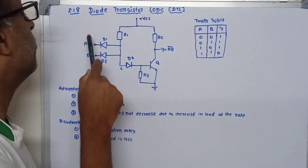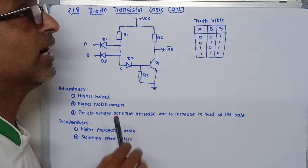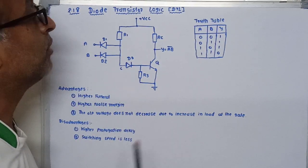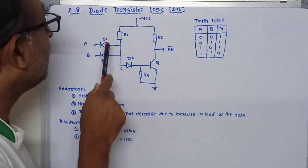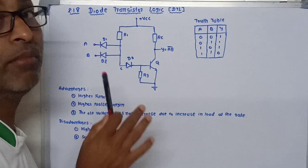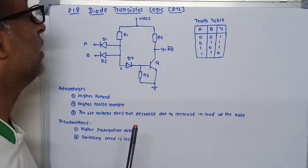Now let me see when both inputs A and B are given to the plus VCC supply, or you can say at logic 1. Now at that time, the diodes remain in off condition.